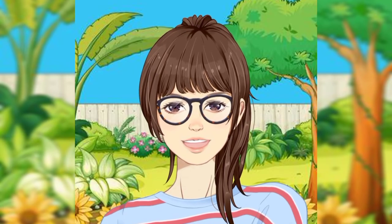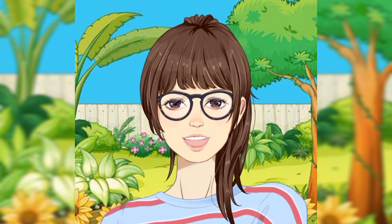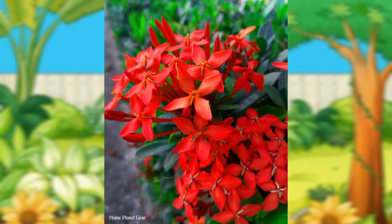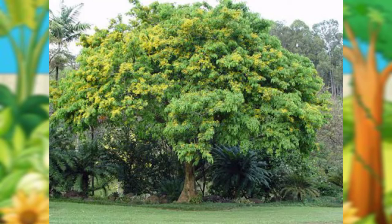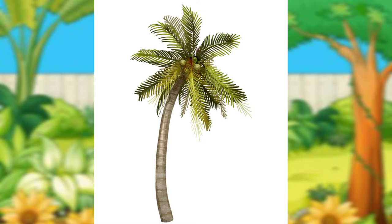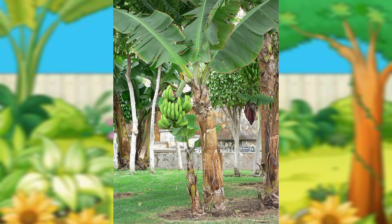Let's have a look at some plants and their uses. This is santan — it makes the surroundings beautiful. This is nara tree — it gives lumber or wood and shade. The coconut tree gives food, lumber or wood, and shade as well. The banana plant gives food, fruits, and shade.